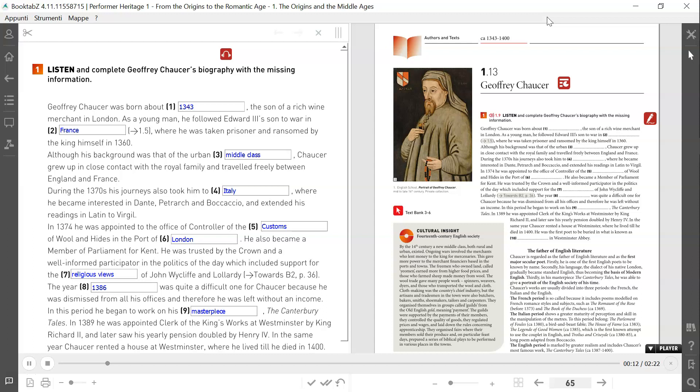Complete Geoffrey Chaucer's biography with the missing information. Geoffrey Chaucer was born about 1343, the son of a rich wine merchant in London. As a young man, he followed Edward III's son to war in France, where he was taken prisoner and ransomed by the king himself in 1360. Although his background was that of the urban middle class, Chaucer grew up in close contact with the royal family and travelled freely between England and France. During the 1370s, his journeys also took him to Italy, where he became interested in Dante, Petrarch and Boccaccio, and extended his readings in Latin to Virgil.